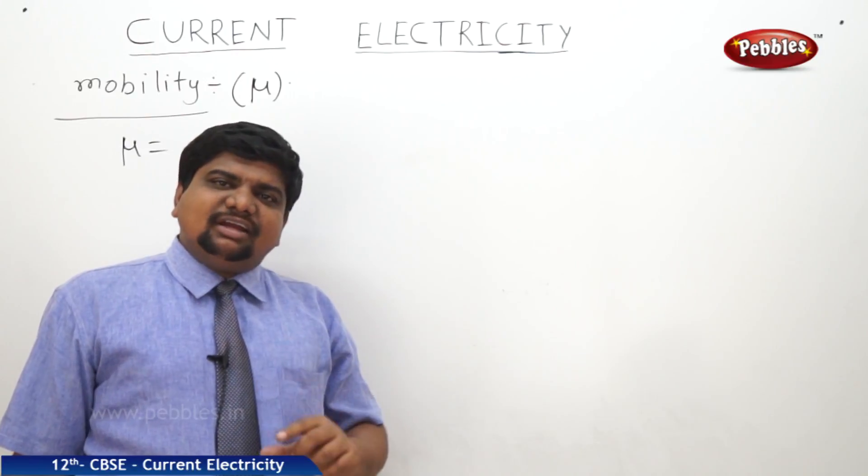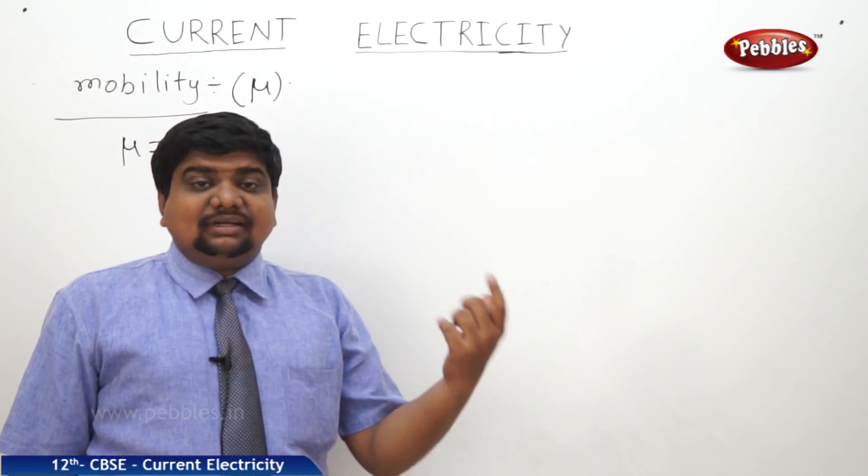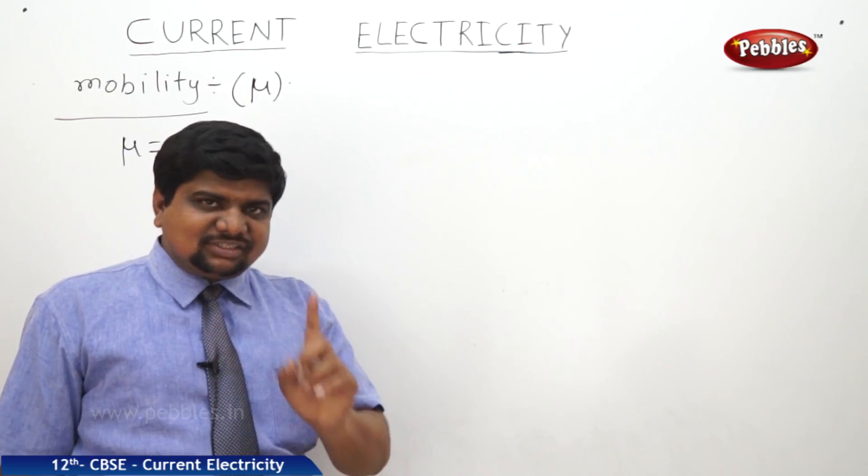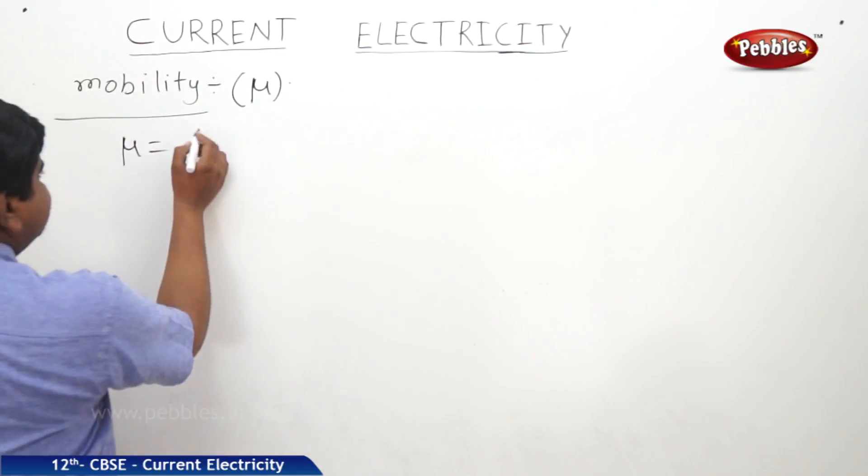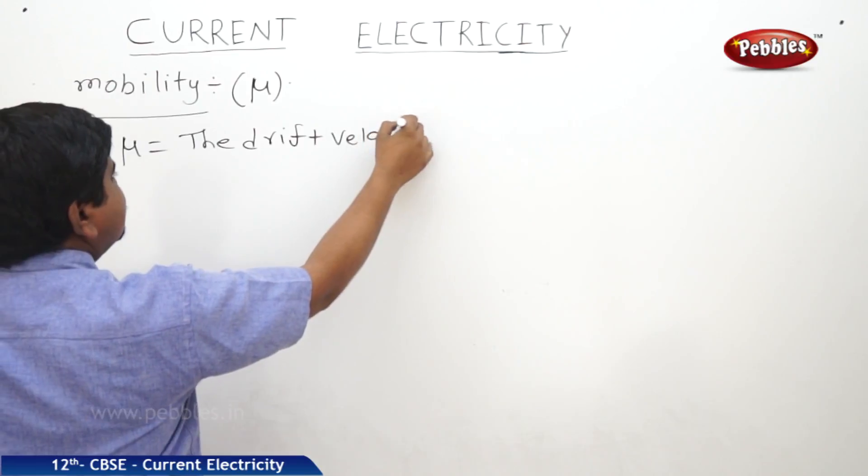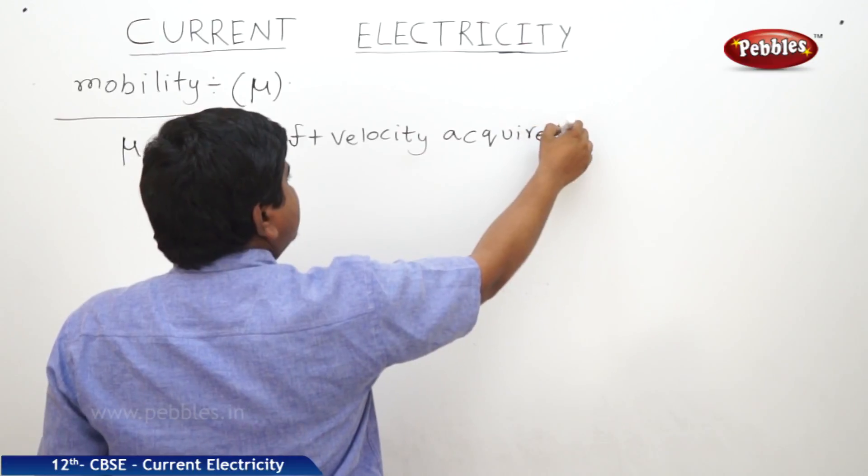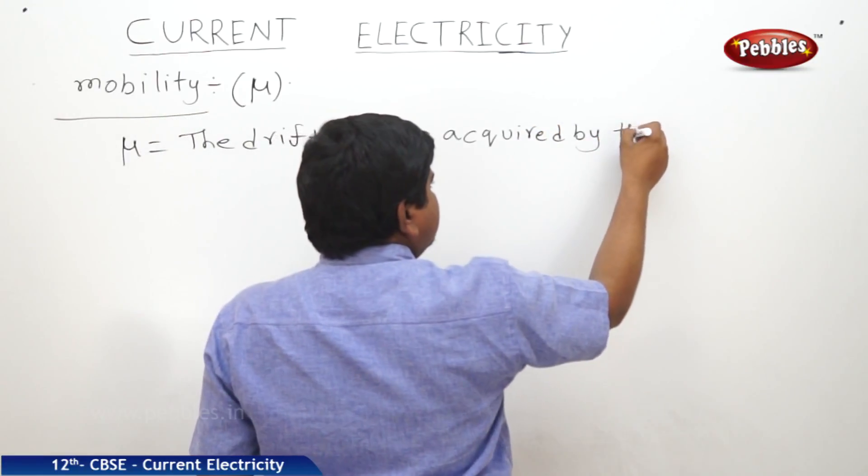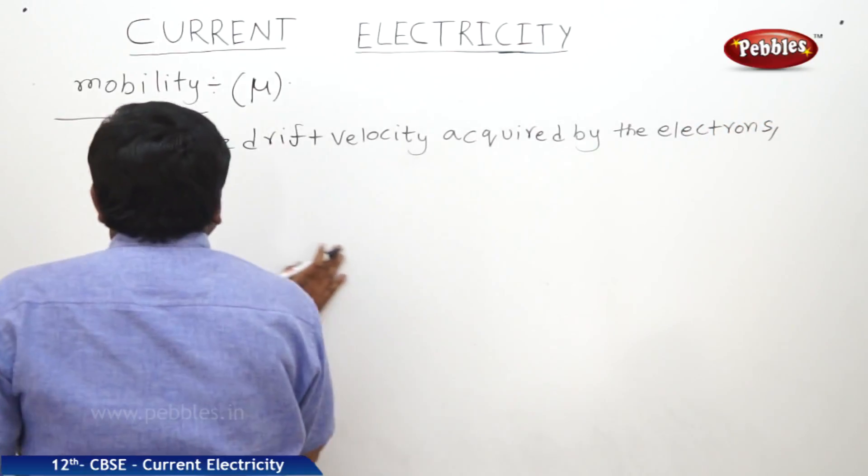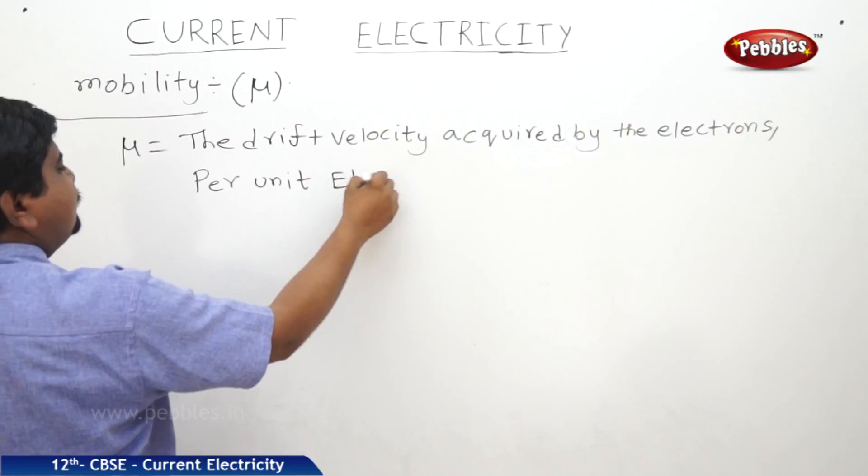How much drift velocity will be acquired by an electron for the application of unit electric field? Mobility. The drift velocity acquired by an electron on the application of unit electric field is called mobility. The drift velocity acquired by the electrons per unit electric field.